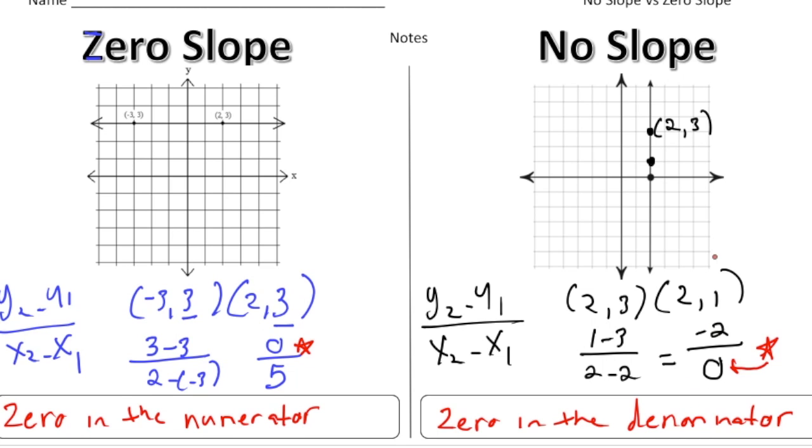And there it is. So one last thing about no slope. This is also called undefined. An undefined slope. So sometimes a teacher might use the term no slope. Or they might use the term undefined. In this case, it's the same thing.